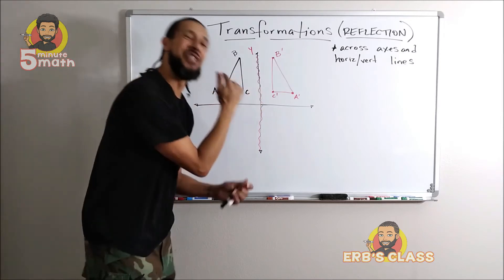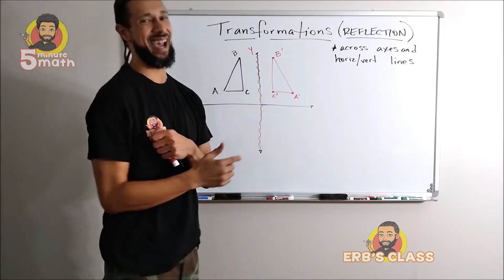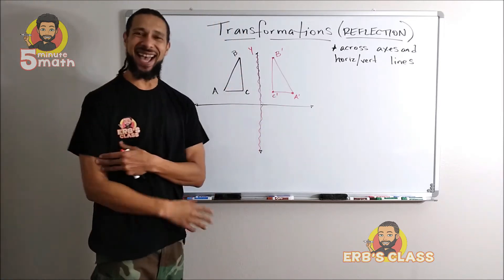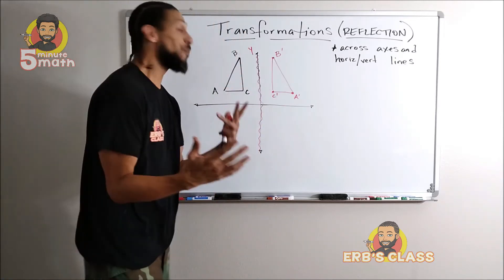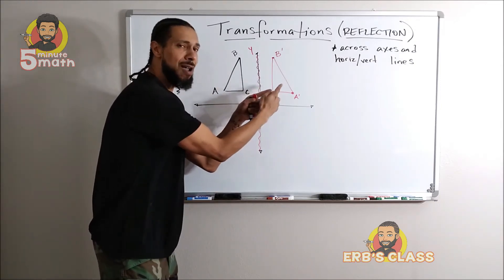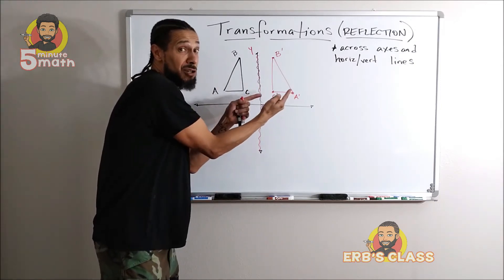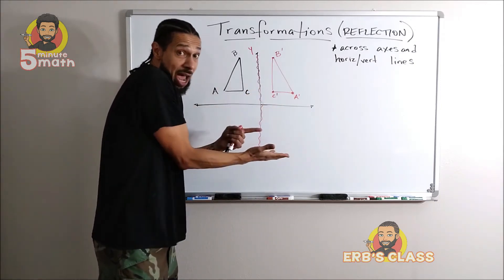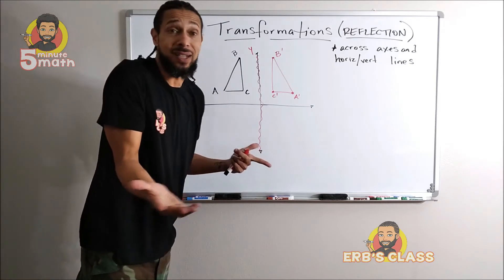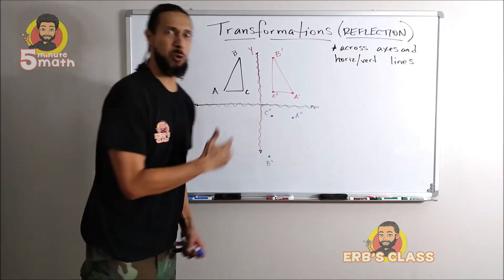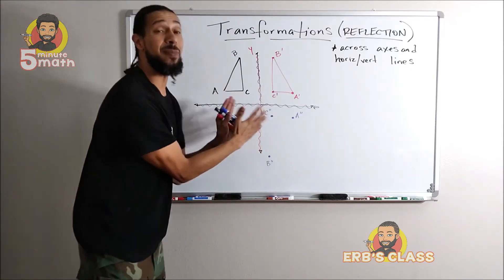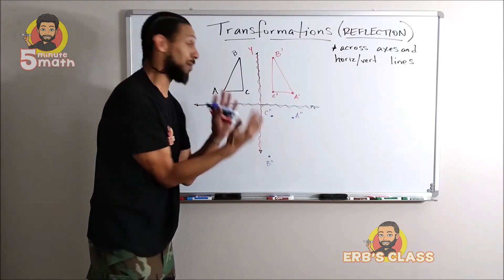So if you have trouble reflecting entire shapes, just reflect one point at a time and connect the dots. Now if I wanted to, I can take this triangle and reflect it across the y-axis, and it would probably look like this.